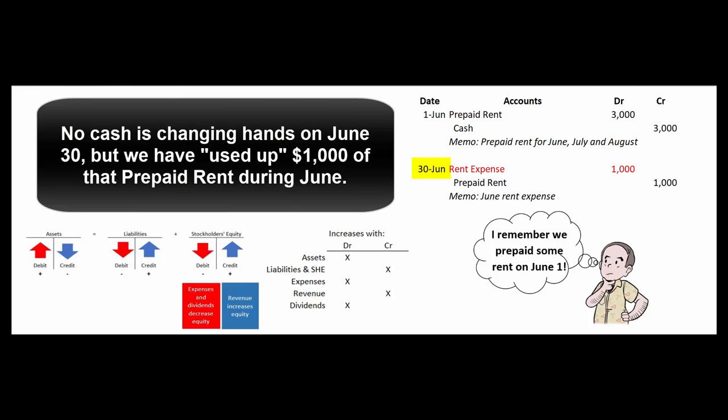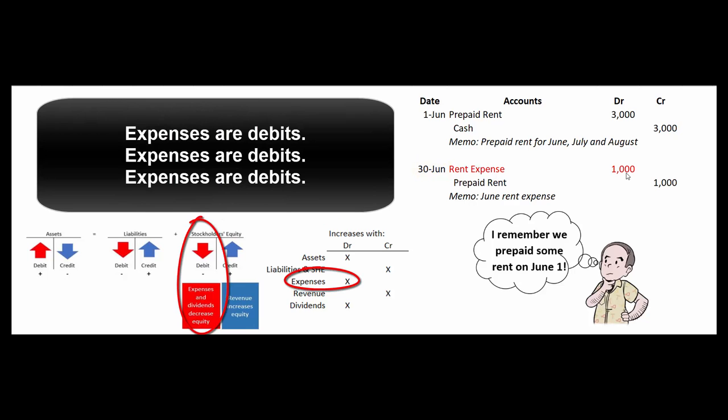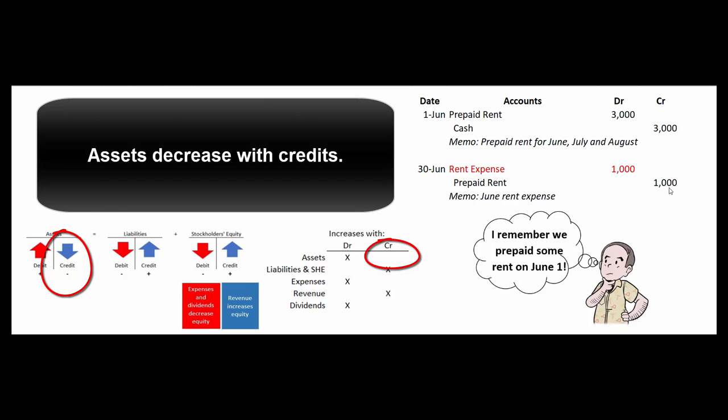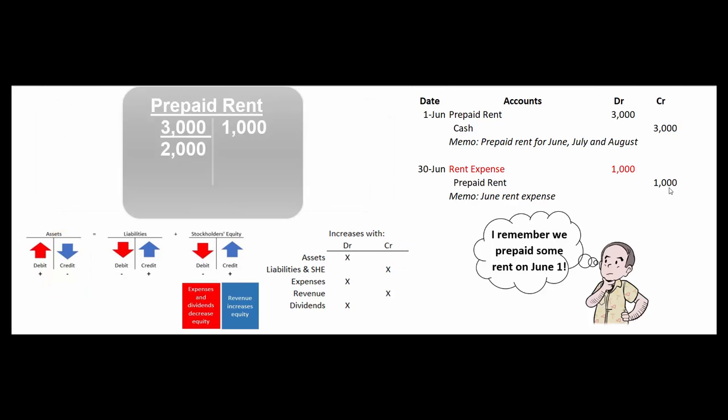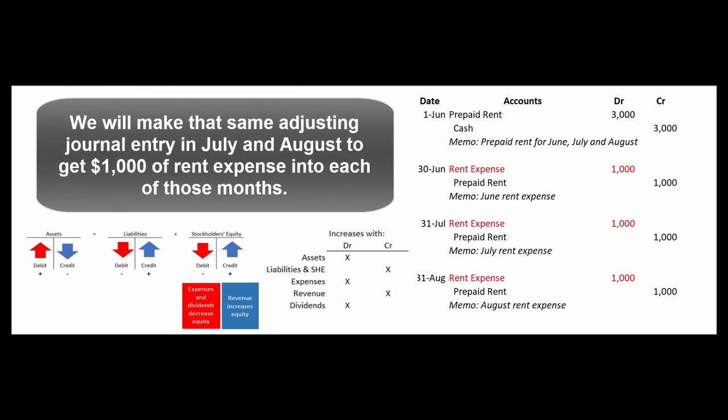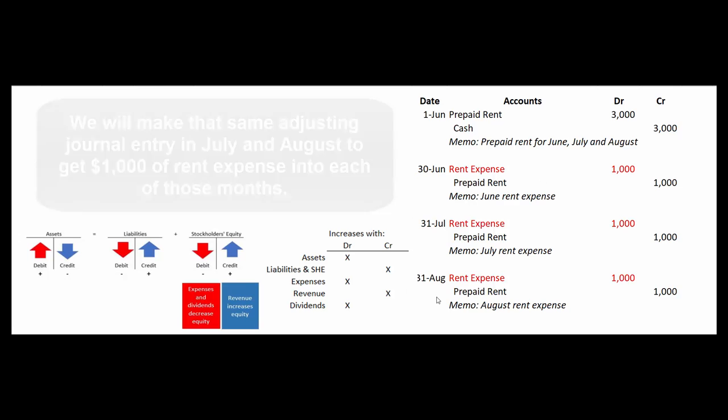So now June 30th comes along and there's no cash changing hands anymore. There's no actual financial transaction taking place, but we have to remember that we have to use up one-third of that three months worth of prepaid rent. So we debit rent expense because expenses are debits, and we credit prepaid rent for $1,000. Prepaid rent is an asset. It increases with debits and decreases with credits. So if you look at our T account for prepaid rent, it now has a balance of $2,000 which represents the prepaid rent for July and August. And we'll make that same adjusting journal entry at the end of July and at the end of August to use up that prepaid rent.